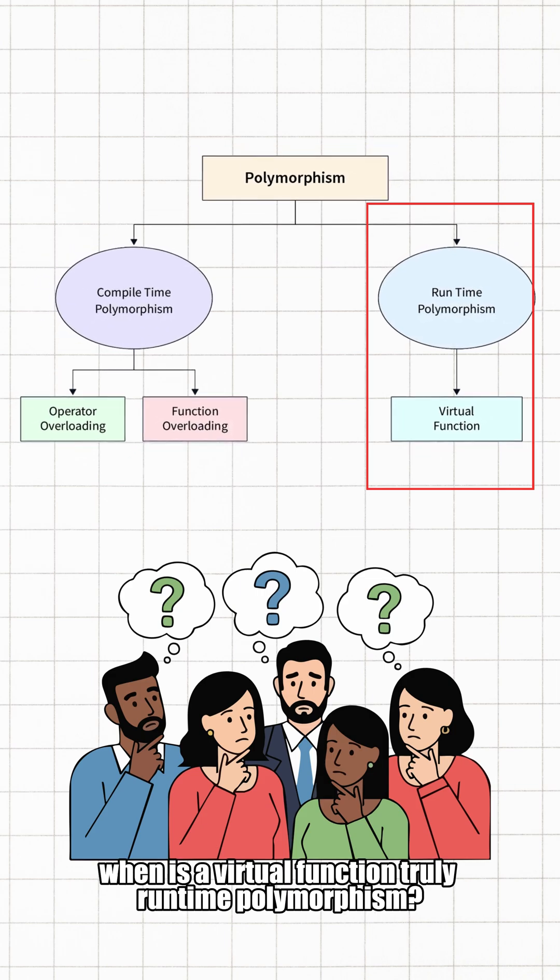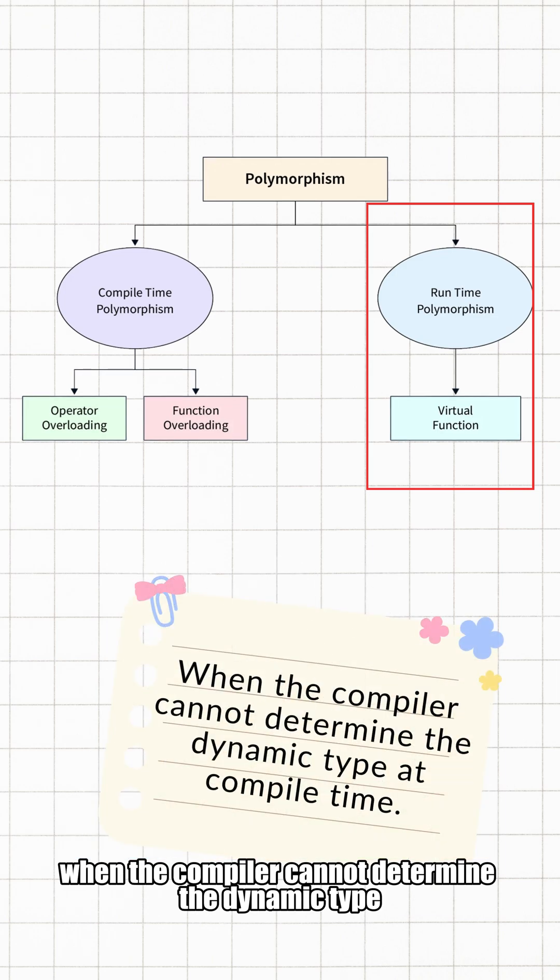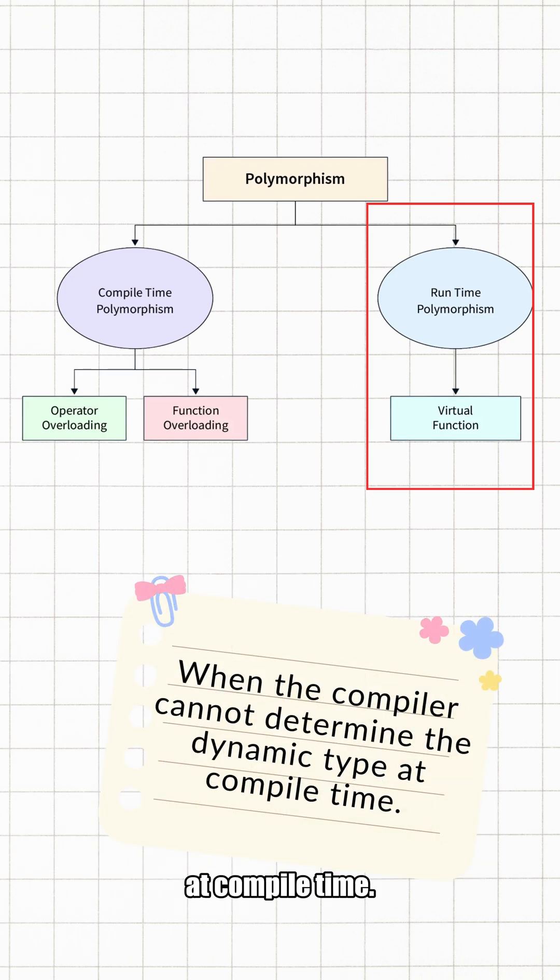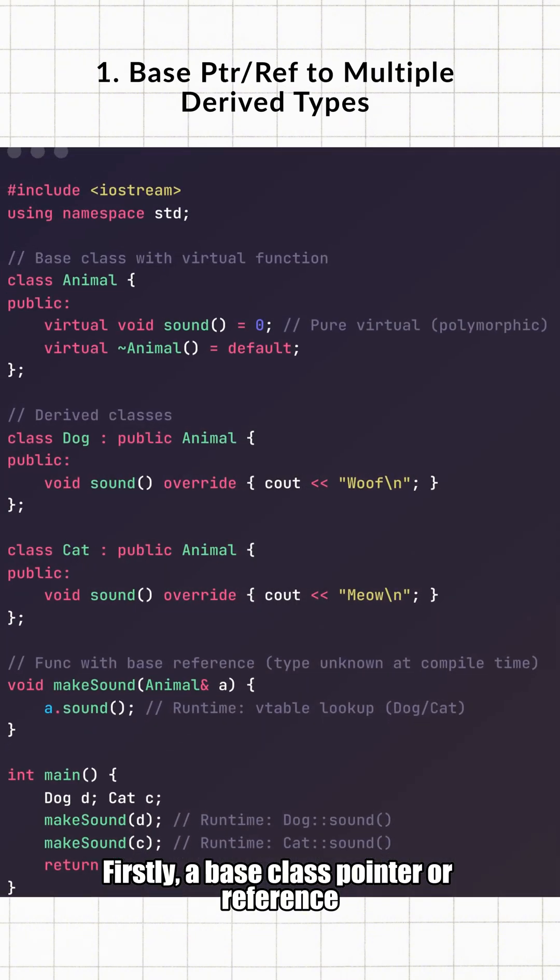You might ask, then when is a virtual function truly runtime polymorphism? The answer has only one condition: when the compiler cannot determine the dynamic type at compile time.